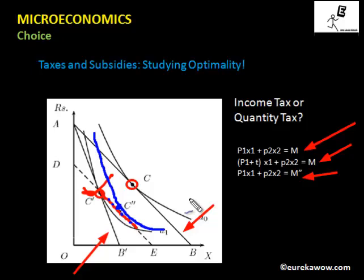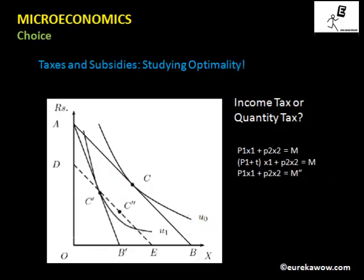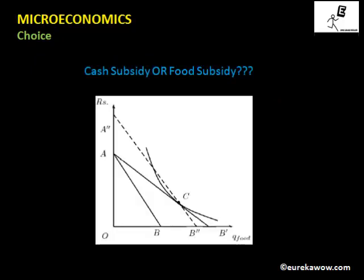Therefore, income tax is more efficient than quantity tax from the consumer's point of view. Now we are going to look into the case of cash subsidy versus food subsidy. There has been a debate about whether poor people should be given food subsidy or cash subsidy by the government, and we will use economic analysis to evaluate which is more efficient from the consumer's point of view. We take our initial budget line as AB.